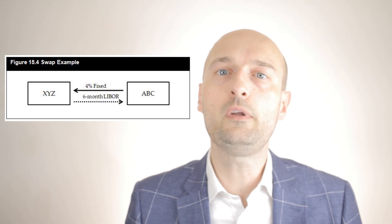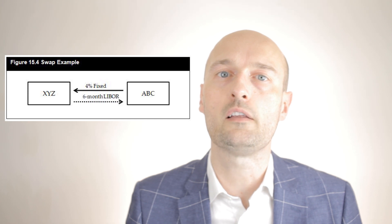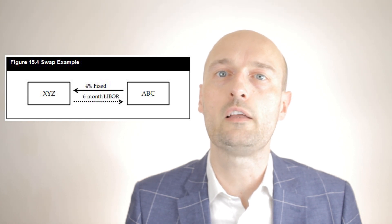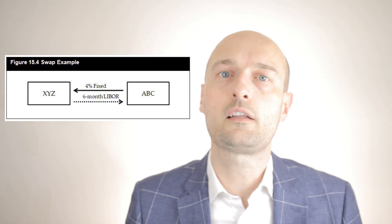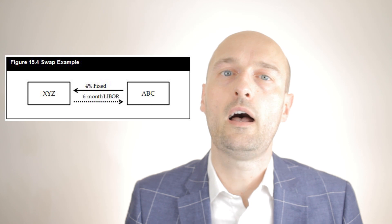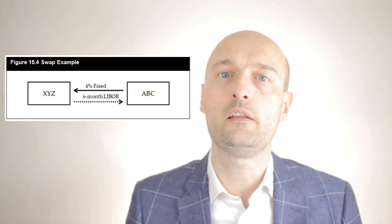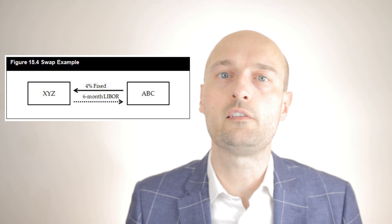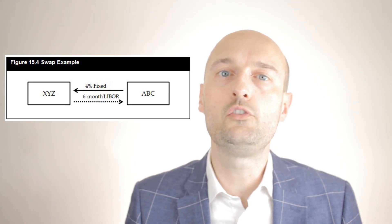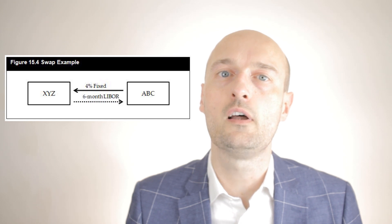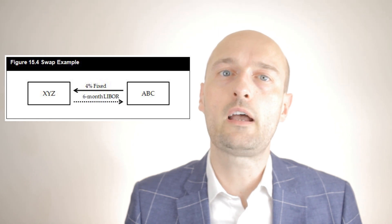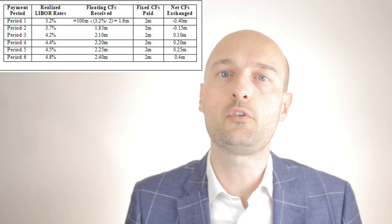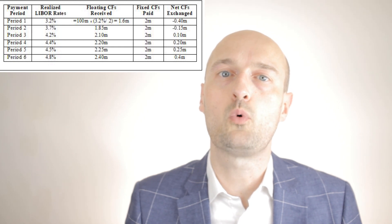Let's look at an example. Suppose two companies, ABC and XYZ, agree to an interest rate swap. ABC agrees to pay a fixed rate at 4% and XYZ agrees to pay a floating rate at LIBOR. The notional principle is $100 million, payments are semi-annual, and the maturity is three years. At the outset we don't know who will win, since we don't know the path LIBOR rates will take. We know there are six cash flow exchanges, and at each point ABC will pay XYZ $2 million.